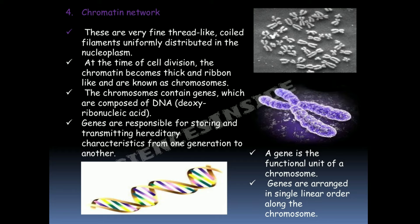The chromatin network consists of very fine thread-like coiled filaments uniformly distributed in the nucleoplasm. At the time of cell division, the chromatin becomes thick and ribbon-like and is called chromosomes. Chromosomes contain genes which are composed of DNA — deoxyribonucleic acid. These genes are responsible for storing and transmitting hereditary characteristics from one generation to another.